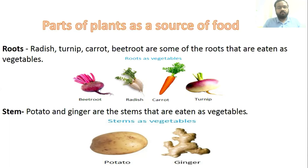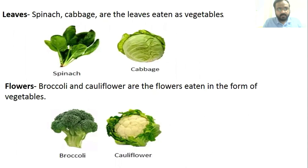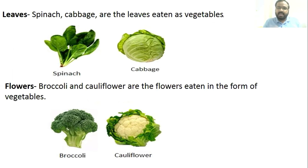Next is stem. Potato and ginger are modified stems that are eaten as vegetables — they are the stems of their respective plants. Next are leaves. Spinach and cabbage are leaves of their respective plants that we consume as vegetables.